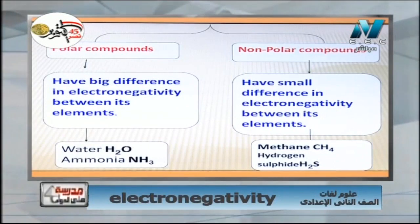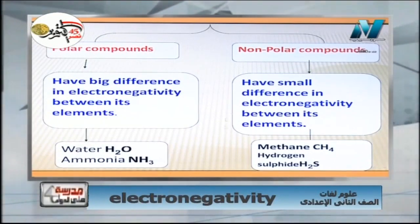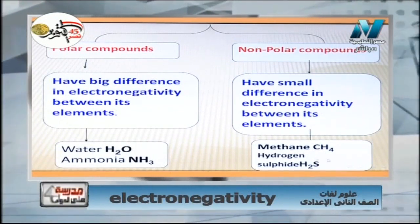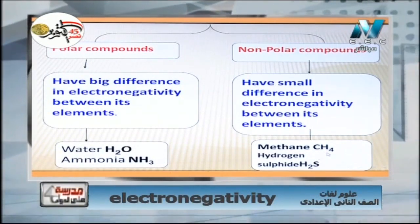A polar compound is one whose elements — like oxygen and hydrogen — have a high difference in electronegativity. Why are ammonia and water called polar compounds? Because they have a high electronegativity difference. In contrast, non-polar compounds have a small difference in electronegativity, like methane and hydrogen sulfide.